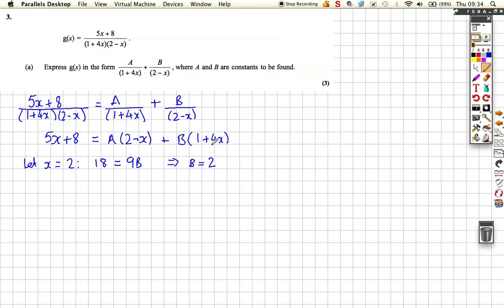I'm going to equate coefficients of x. I could let x equal to minus a quarter, but that makes the calculations a little bit different. So, if you equate the coefficient of x, we've got 5 on the left, because that's the thing multiplied by x, so just the numbers, not the x. 5 is equal to minus a plus 4b here. But we know that b is 2, so we know that 5 is equal to minus a plus 8, or rearranging, minus 3 is equal to minus a, so therefore a equals 3.